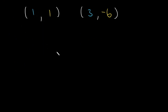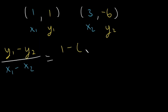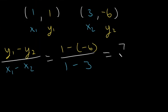Here we have the points (1, 1) and (3, negative 6). Let's calculate the slope. This time let's use y1 minus y2 over x1 minus x2, just to show it goes both ways. So this is going to be 1 minus negative 6, divided by 1 minus 3. That gives us 1 plus 6, which is 7, divided by negative 2. So the slope is negative 7 over 2.